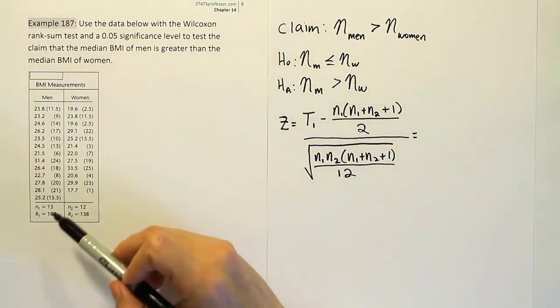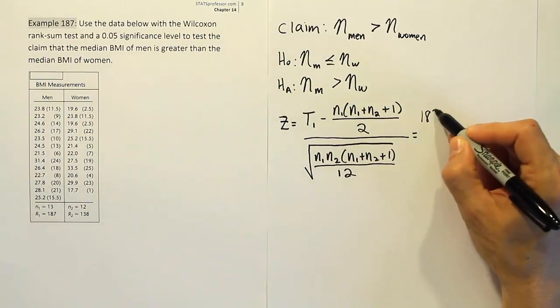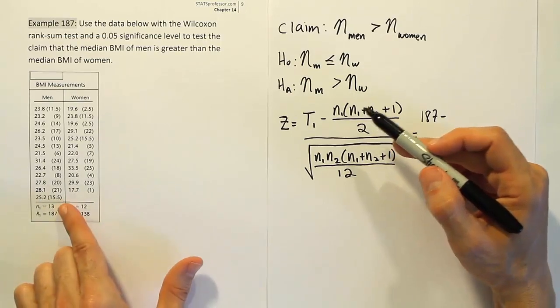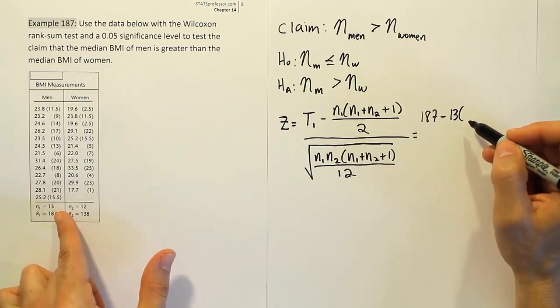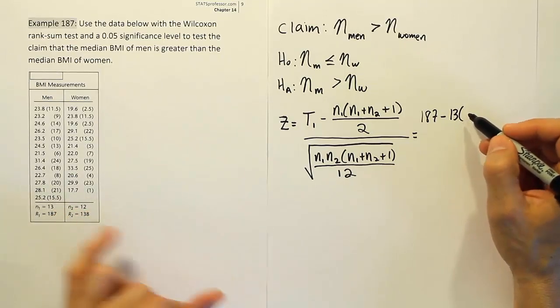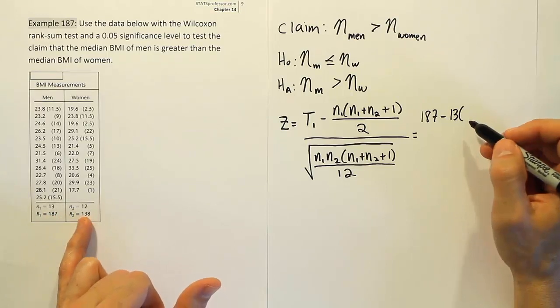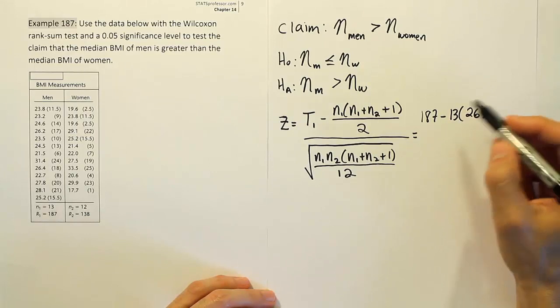So let's fill that in. The rank total for the first group is 187. 187 minus the sample size for the first group. Well you can see that that's 13. So 13 and then it would be 13 plus 12 plus 1. Now 13 plus 12 if you look at that is 25, and then 25 plus 1 is 26 so we can just say 26 there to save some space. And that will be divided by 2.